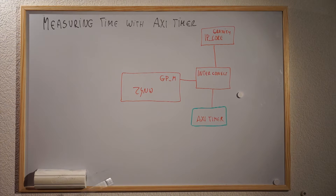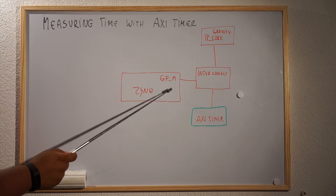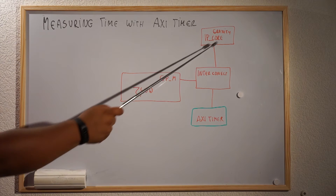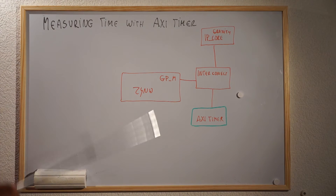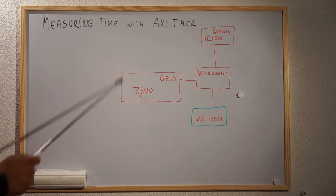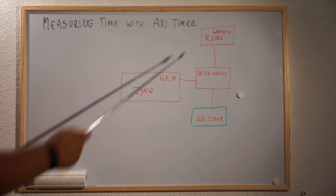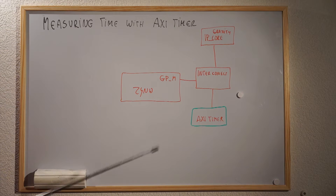Measuring time with the AXI timer — the connection with the AXI timer core is quite simple. We have our Zynq, we enable the general purpose master port, and we're going to use an interconnect to connect our IP core from our previous Vivado HLS training that calculates gravity, and the AXI timer. Both of them use the AXI4-Lite interface, which means they are memory-mapped. So the gravity IP and the AXI timer, from the point of view of the Zynq software, are just pointers to some address in memory. We're going to measure the execution time in software and the execution time with gravity running on hardware, and compare how many cycles each takes.